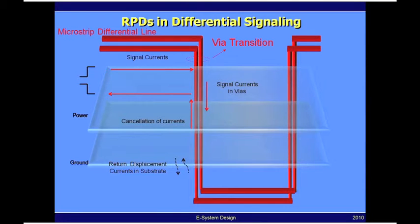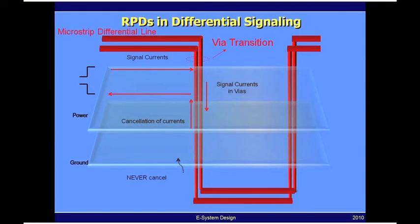Since they do not cancel each other, you still create these cavity modes between the voltage and ground planes of the power distribution network. And that will cause degradation in the signal waveform.